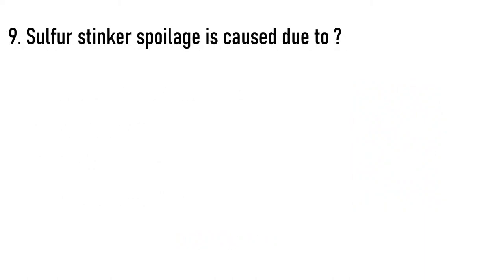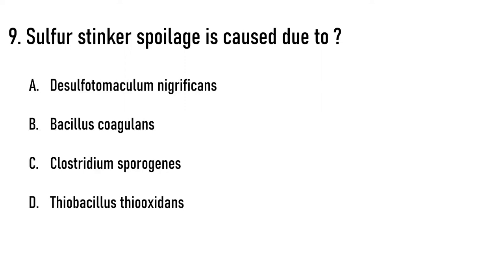Sulphur stinker spoilage is caused due to dash. Options are A) Desulphotomaculum nigrificans, B) Bacillus coagulans, C) Clostridium sporogenus, D) Thiobacillus thiooxidans. The correct answer is option A, Desulphotomaculum nigrificans. This is the bacteria which produces sulfur gas, hence it is called sulfur stinker spoilage.